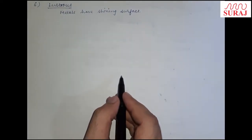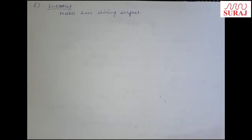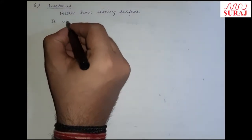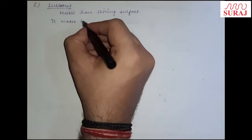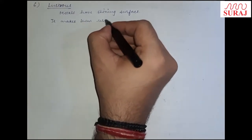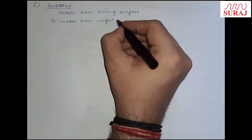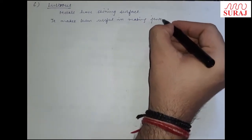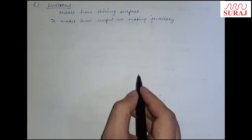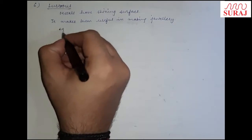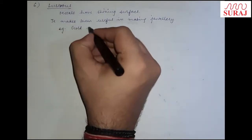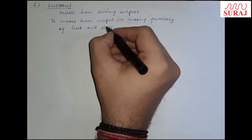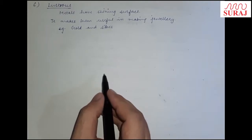This shining surface makes metals useful in making jewelry. For example, gold and silver — if we build ornaments from them, this is because of their luster, their shine. So lustrous is a better property for jewelry-making.